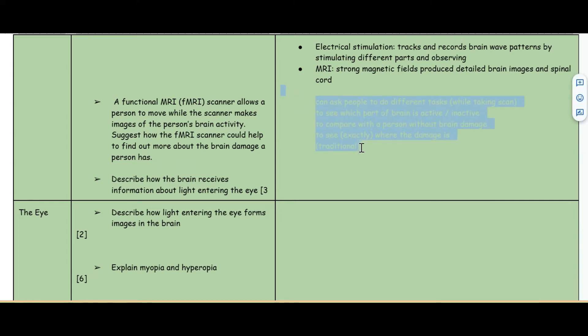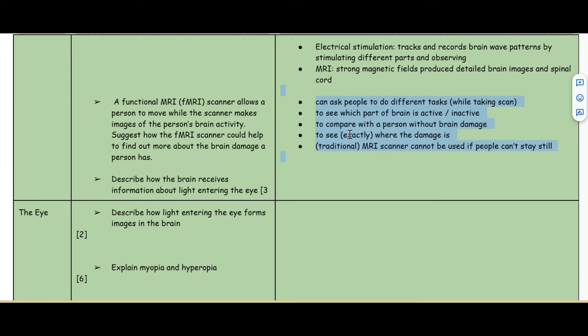A functional MRI scanner allows a person to move while the scanner makes images of the person's brain activity. Suggest how fMRI scanner could help to find out more about brain damage. You can ask people to do different tasks to see which part of the brain is active, to compare with the person without brain damage to see exactly where the damage is.